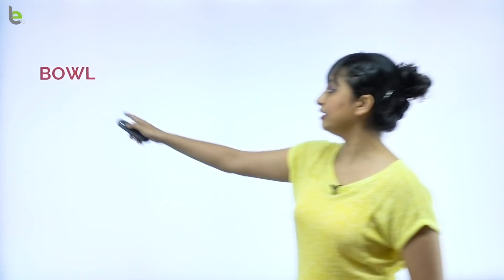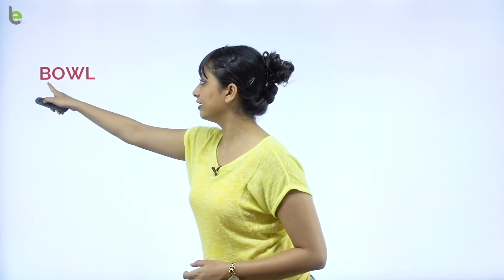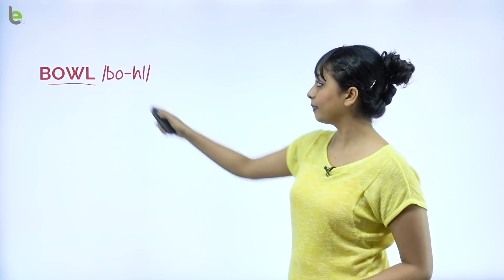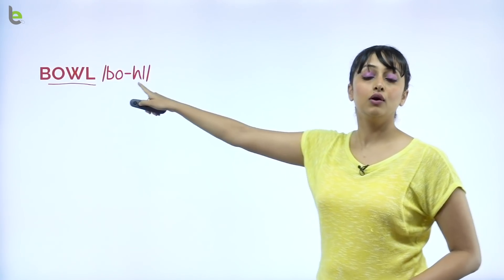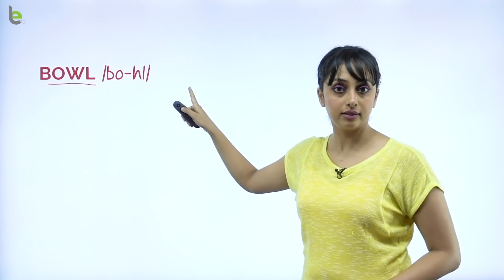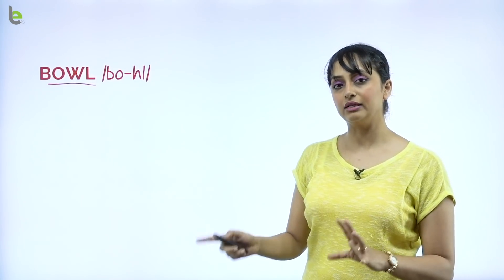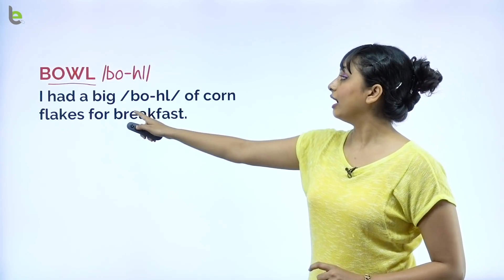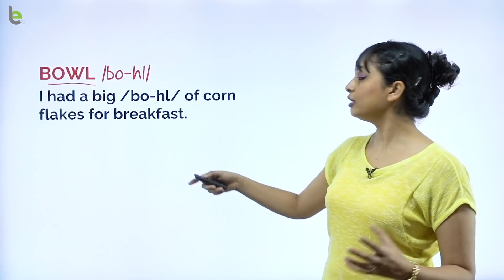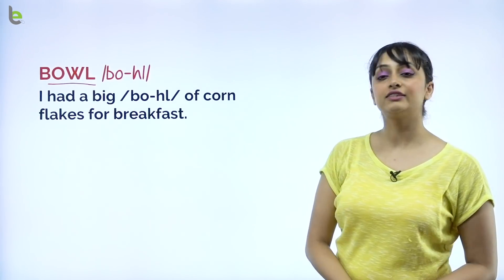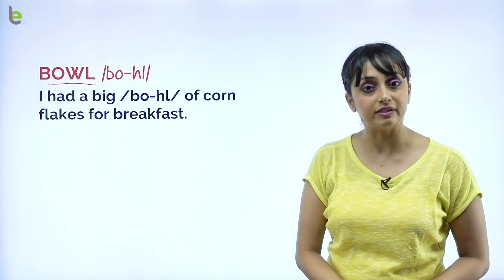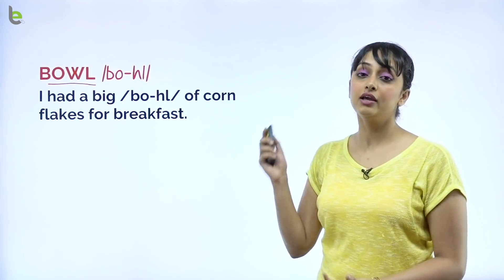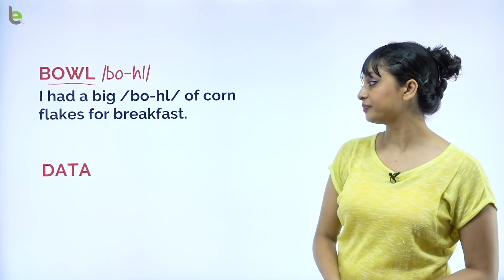The next word — its correct pronunciation is 'bowl.' Bowl. Not 'baawil' — that is wrong. Bowl. For example: I had a big bowl of cornflakes for breakfast. I ate a large bowl of cornflakes for breakfast.